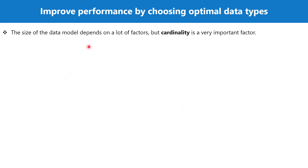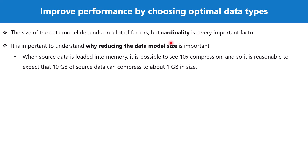In terms of the size of the data model, cardinality of the column is a very important factor, and this cardinality also has something to do with the data type you choose. Before we talk about why it is important to choose the optimal data type, we must understand that Power BI is already trying to reduce the data model size by employing compression. We have touched upon the VertiPaq storage engine in a previous video, and we have seen that the VertiPaq engine tries to compress the data and then stores it.